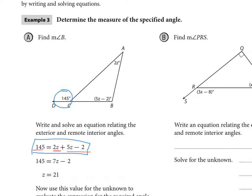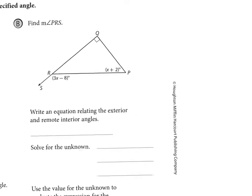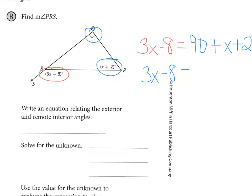So let's look at B and see if we can do B. So the remote angle, okay, 3x minus 8 is my remote angle, and is equal to the sum of the remote two angles. So the remote two angles will be 90 plus x plus 2. So I would get 3x minus 8 equals x plus 92.